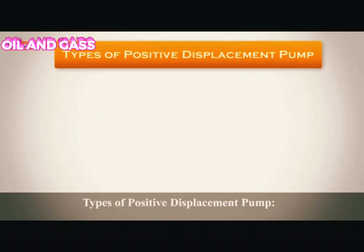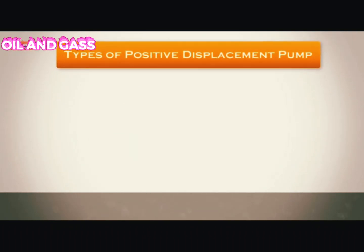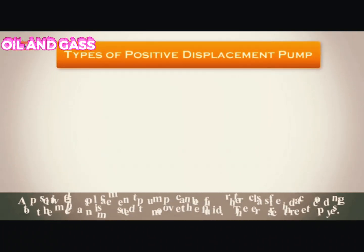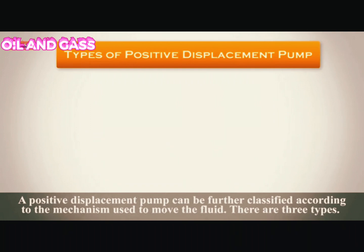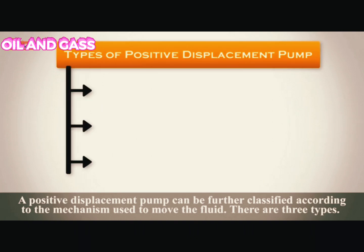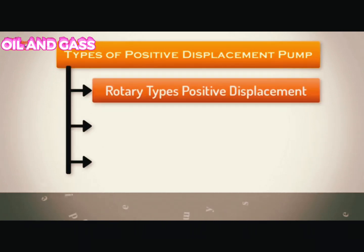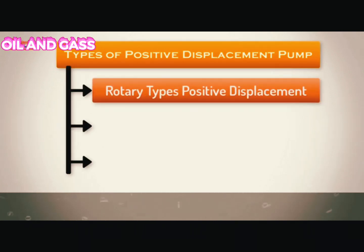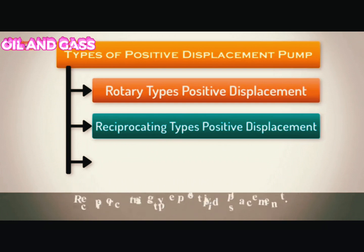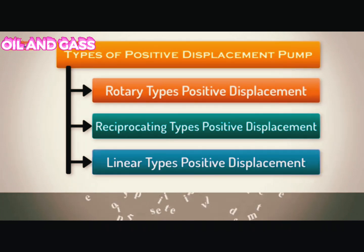Types of positive displacement pumps. A positive displacement pump can be further classified according to the mechanism used to move the fluid. There are three types: rotary type positive displacement, reciprocating type positive displacement, and linear type positive displacement.